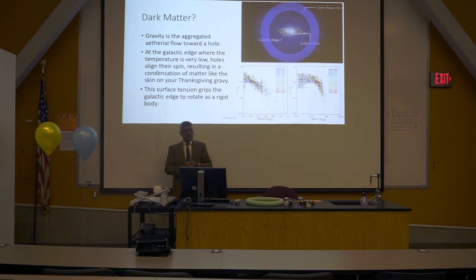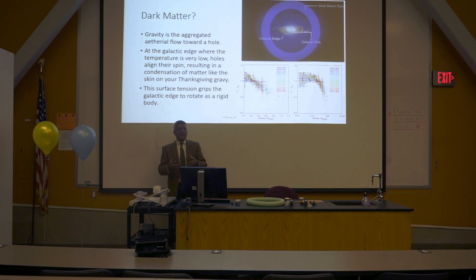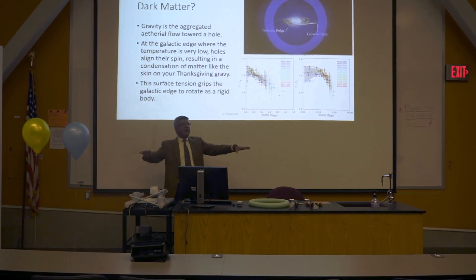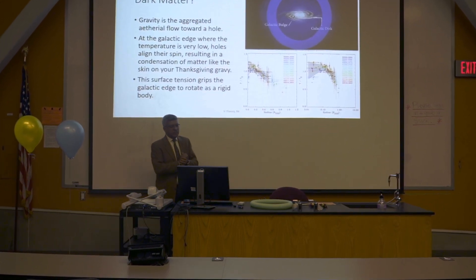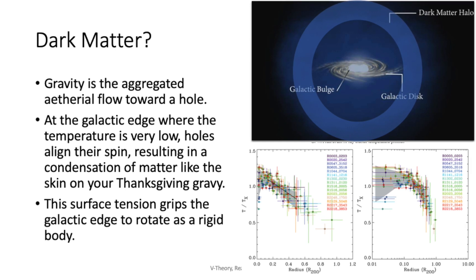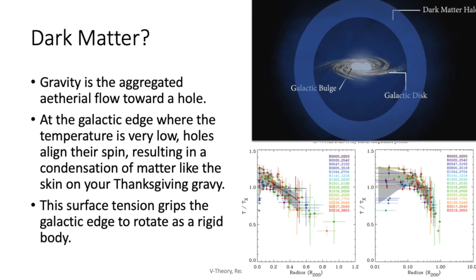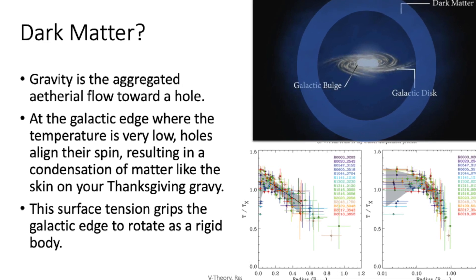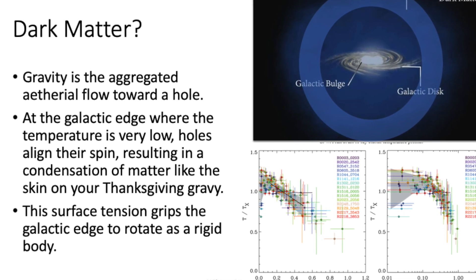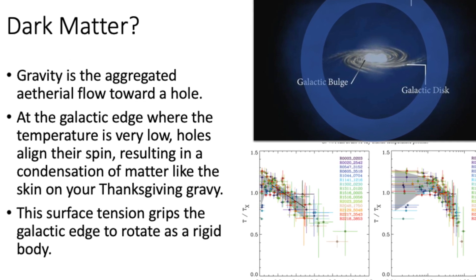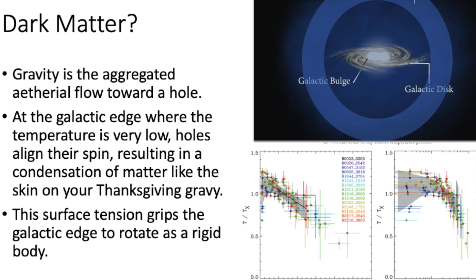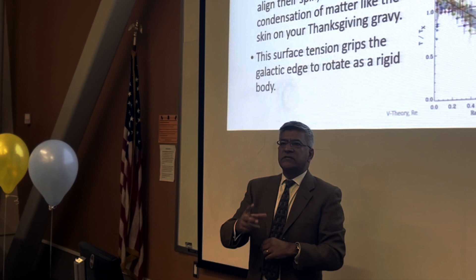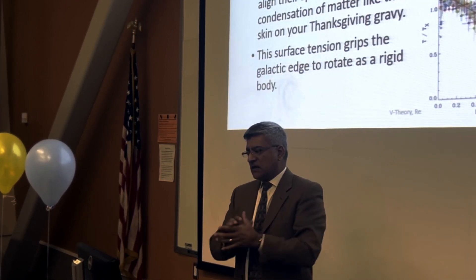Let's just do a detour here in the search for dark matter. It's my hunch that at the galactic edge, when particles, when holes are in an area of very, very low ethereal turbulence, low temperature, their spins would align. And then you'd get a net sort of flow around the holes. And that would almost be like a condensation of these holes. And it'd be like the skin on your Thanksgiving gravy. The surface tension grip at the edge of the galaxy would cause it to rotate as a rigid body, which is what we observe. So it's not really a search for dark matter. It's a modification of gravity or it's a deeper understanding of gravity and the effects that it would have.